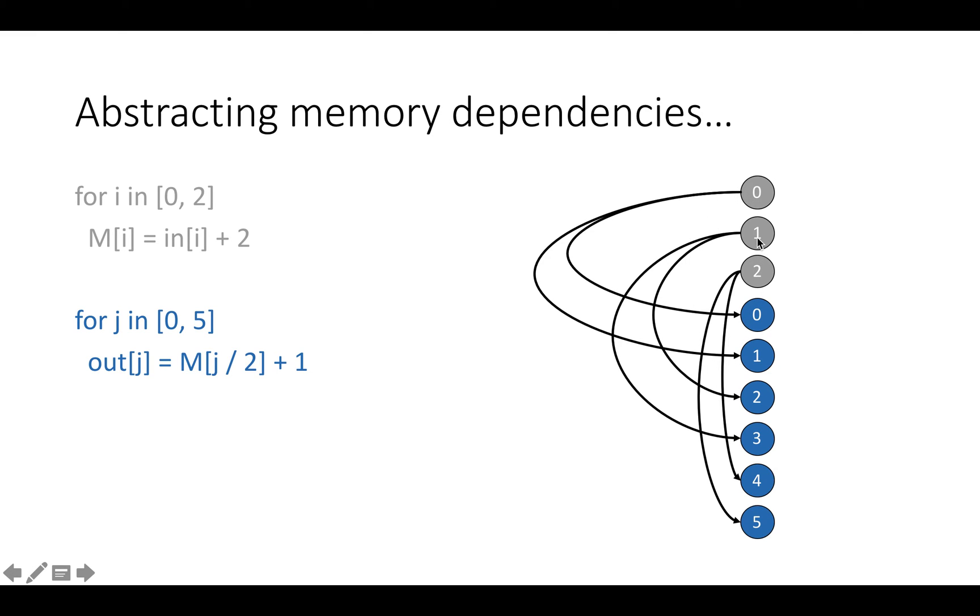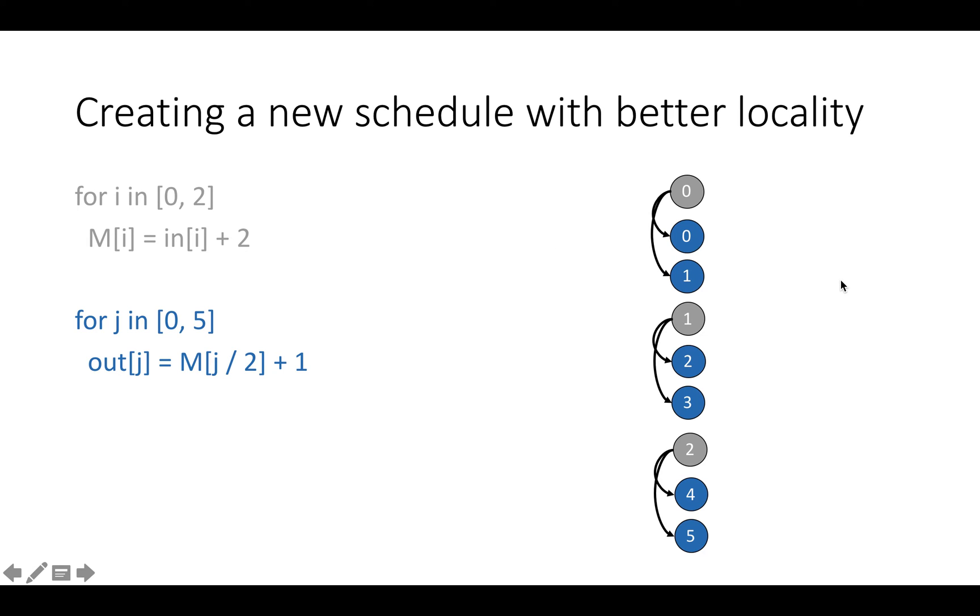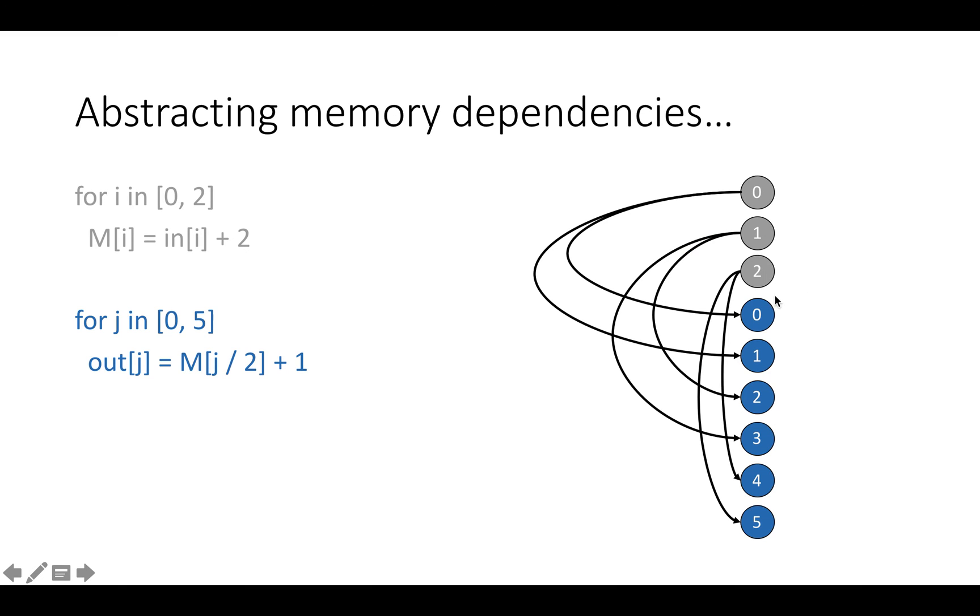For example, we could shift, we could change the positions of iterations one and two of this producer loop, without changing the meaning of the program because swapping the positions of one and two wouldn't make any loop arrow that's currently going forward go backward. So with this model, we can create a new schedule which has better locality, and locality really just means we're doing iterations of the consumer loop that read data closer to the producer loop that wrote the data that they read. For example, we can take iteration zero and one of the consumer loop and just push them above iterations one and two of the producer loop to bring them right next to iteration zero of the producer loop, which is the guy who produces their data.